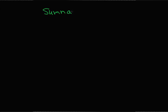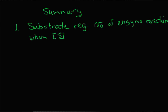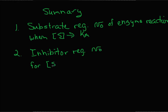To summarize what we've learned about enzyme regulation: first, substrate can regulate the velocity of an enzyme reaction, but only when the substrate concentration is around the same value as the Km. Second, an inhibitor regulates the velocity of the enzyme reaction so that for a given substrate concentration, the inhibitor will decrease the velocity by a certain amount. That's the way substrates and inhibitors regulate enzyme reactions.